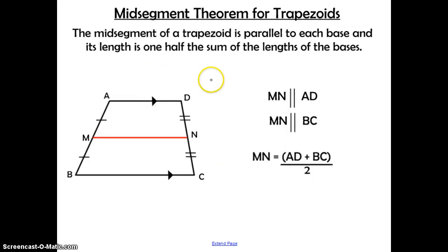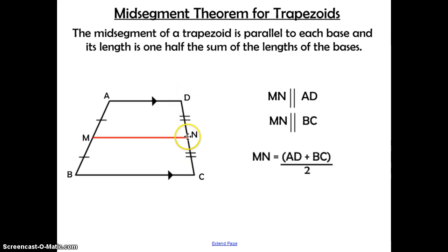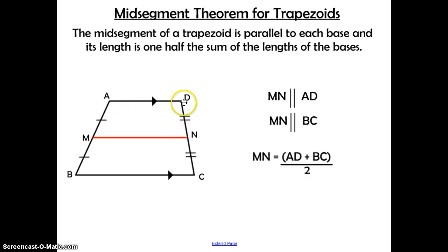Mid-segment theorem for trapezoids: the mid-segment of a trapezoid is parallel to each base, and its length is one-half the sum of the lengths of the bases. MN is our mid-segment — M is the midpoint of segment AB, so AM is congruent to MB. Likewise, N is the midpoint of DC, so DN is congruent to NC. The theorem tells us MN is parallel to AD and also parallel to BC. The formula is MN equals AD plus BC divided by 2. This is an important formula to memorize because it will not be on your SOL formula sheet.